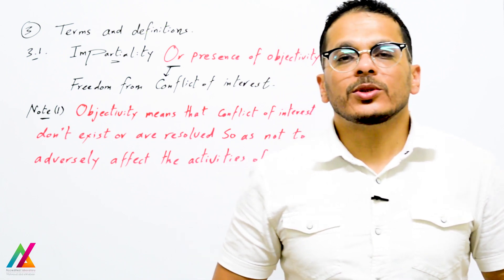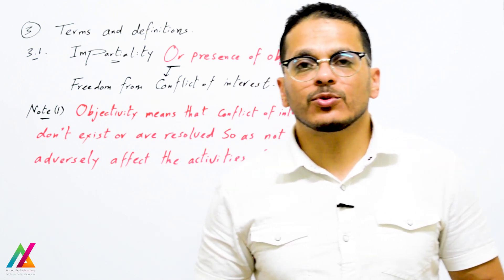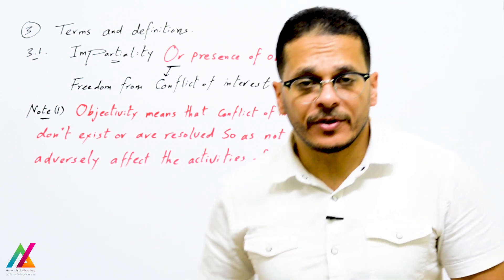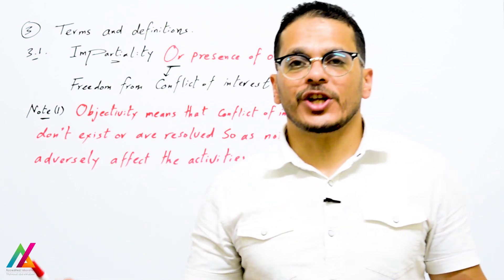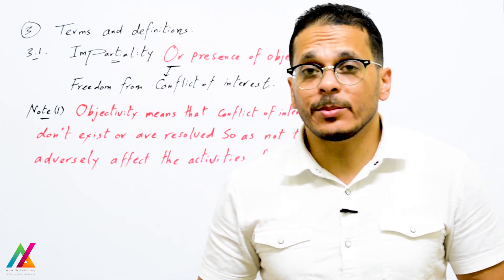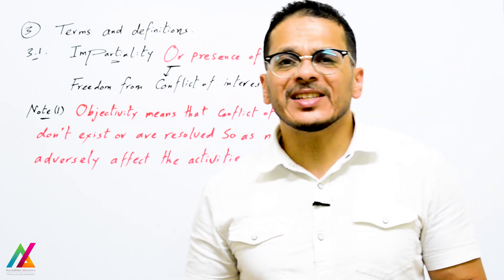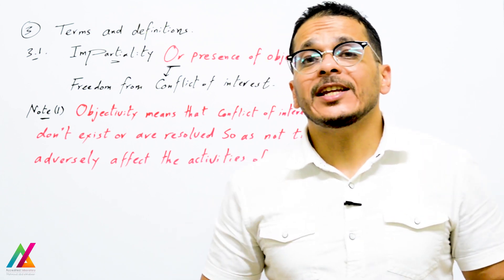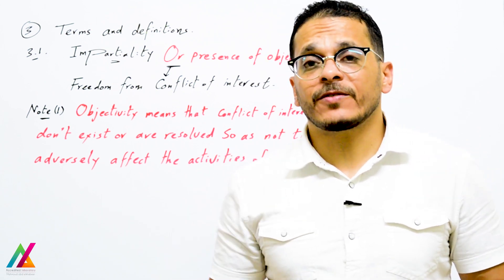Welcome back with a new lecture on ISO IEC 17025 2017 edition, covering terms and definitions. The first definition is impartiality. Impartiality, or presence of objectivity, means there is no conflict of interest — freedom from conflict of interest — so there should not be any conflict of interest that may have negative effects on lab activities or lab results.